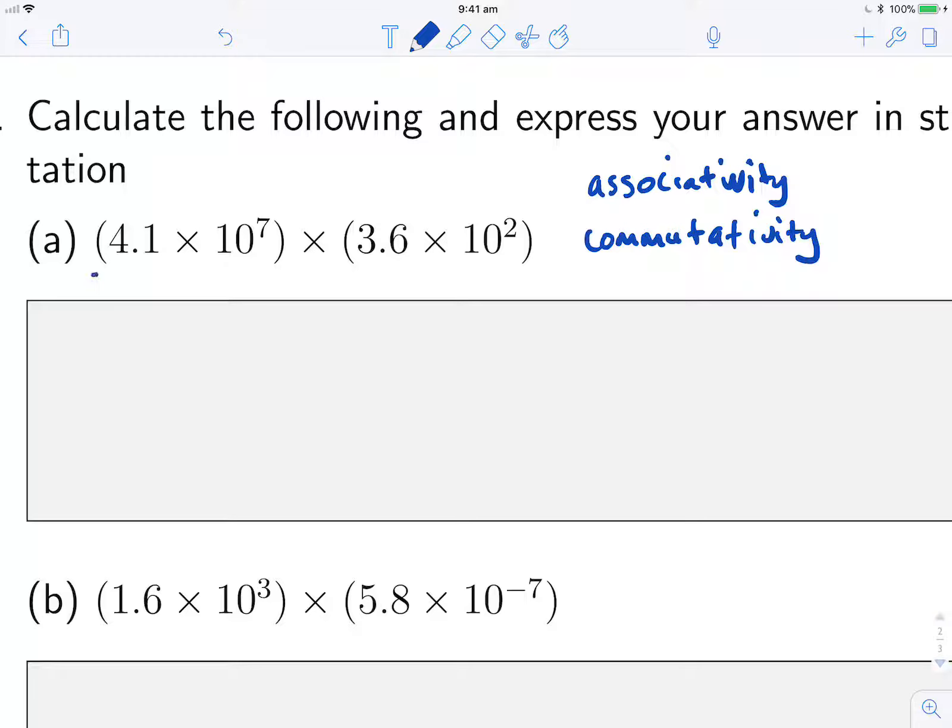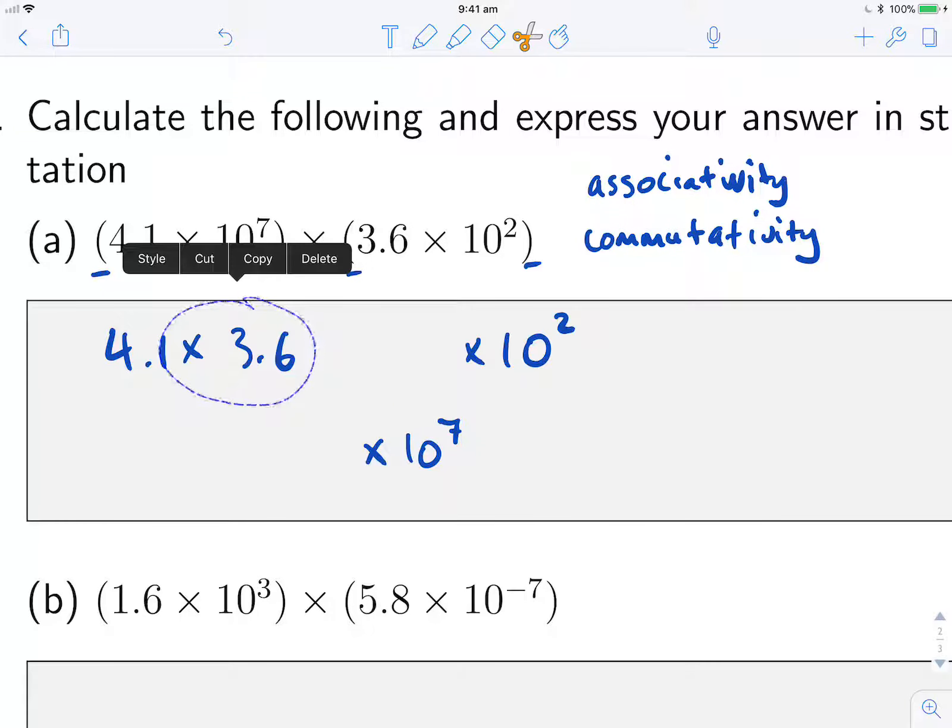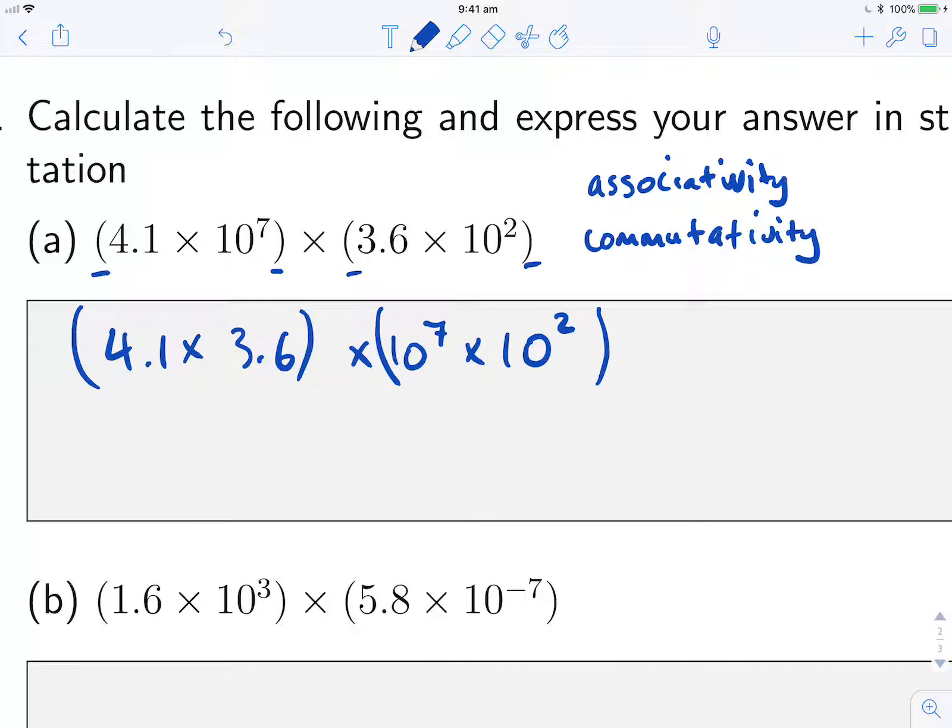So here, what it means is that these brackets essentially are not important or not needed. I can write this out as 4.1 times 10 to the 7 times 3.6 times 10 squared, and it doesn't matter whether I evaluate this part first or this part first. Associativity counts but commutativity applies as well, so I'm allowed to change around the order of the multiplications. I can change the order of the multiplication and then evaluate this bit and this bit separately. So that's exactly what I do.